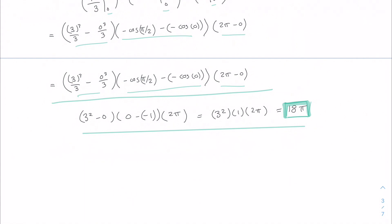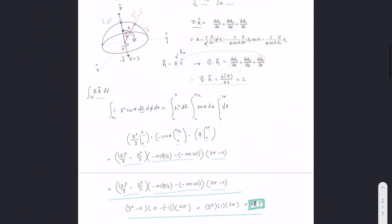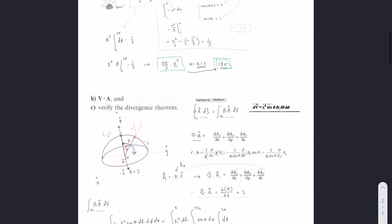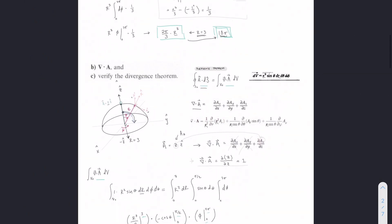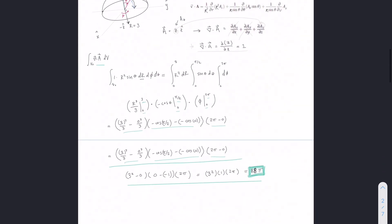So we have 18 pi here, and we had 18 pi for our first half here. So therefore, our left side is equal to our right side, and we verified the Divergence Theorem.